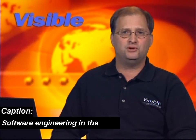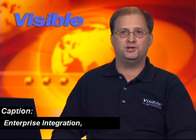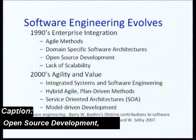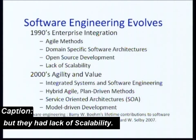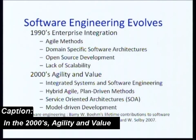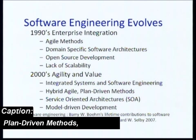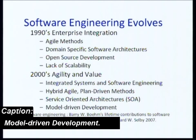Software engineering in the 1990s evolved into enterprise integration, agile methods, domain-specific software architectures, open-source development, but they had lack of scalability. In the 2000s, agility and value showed up in the marketplace, along with integrated systems and software engineering, hybrid agile, plan-driven methods, service-oriented architectures, and model-driven development.